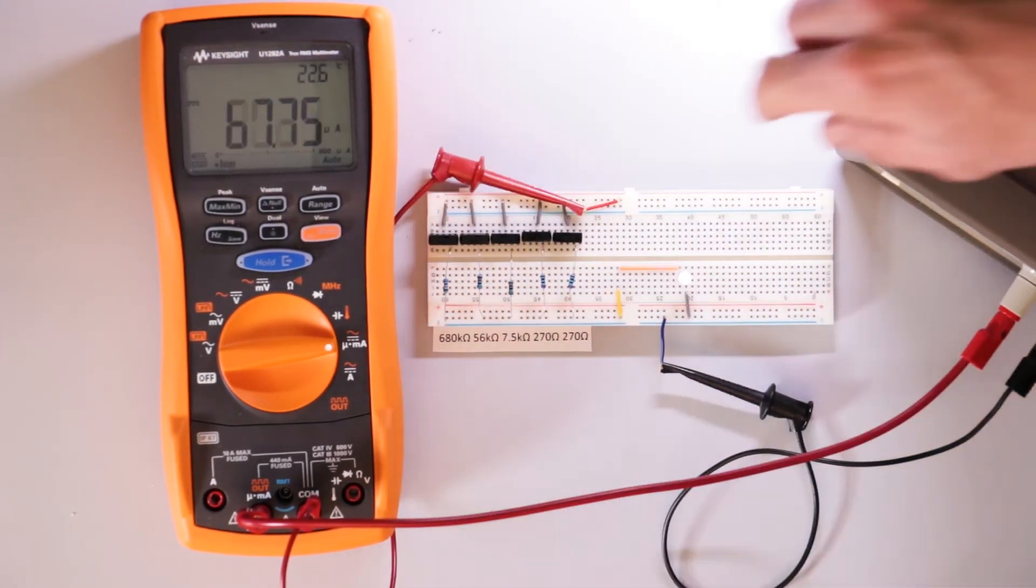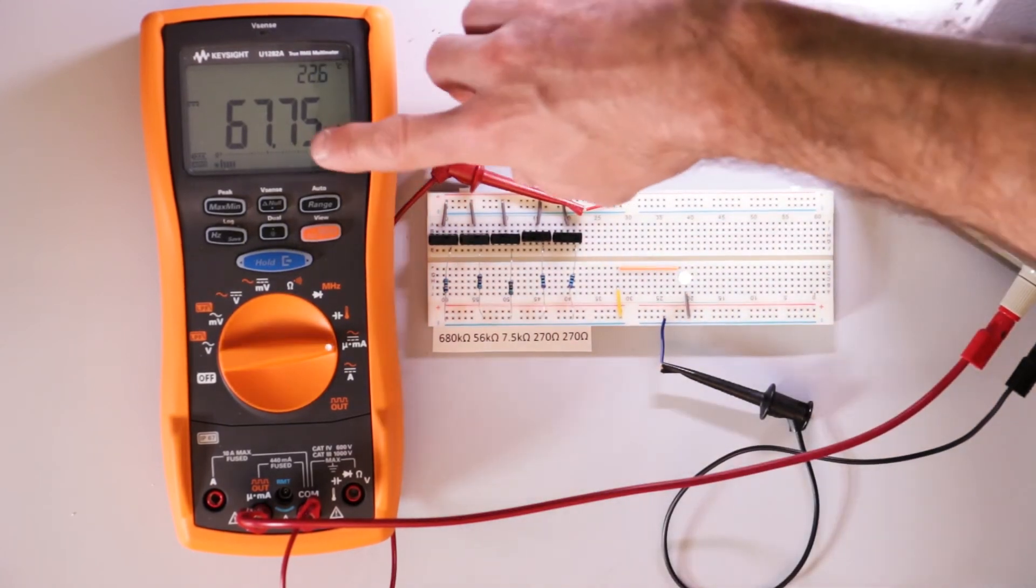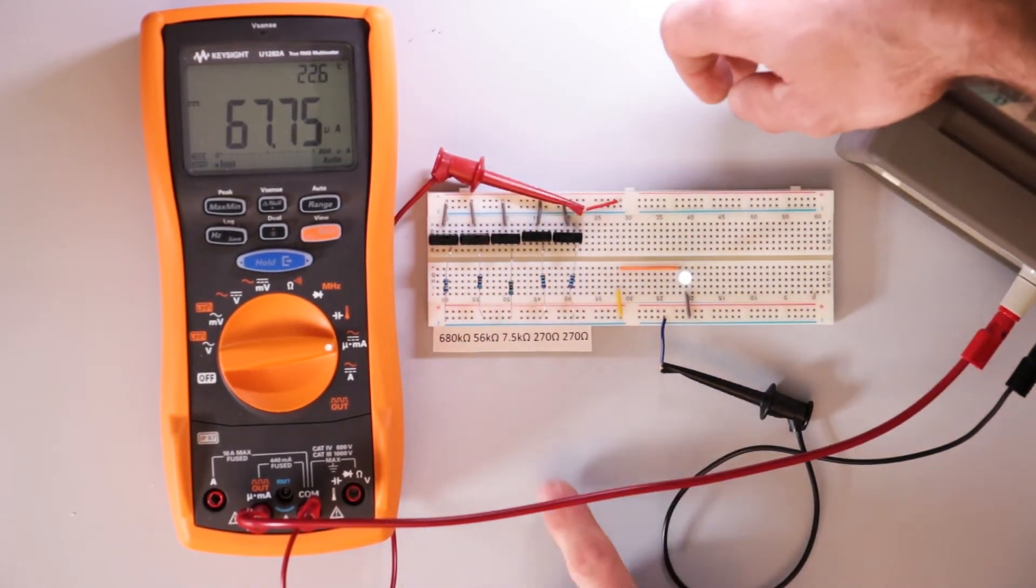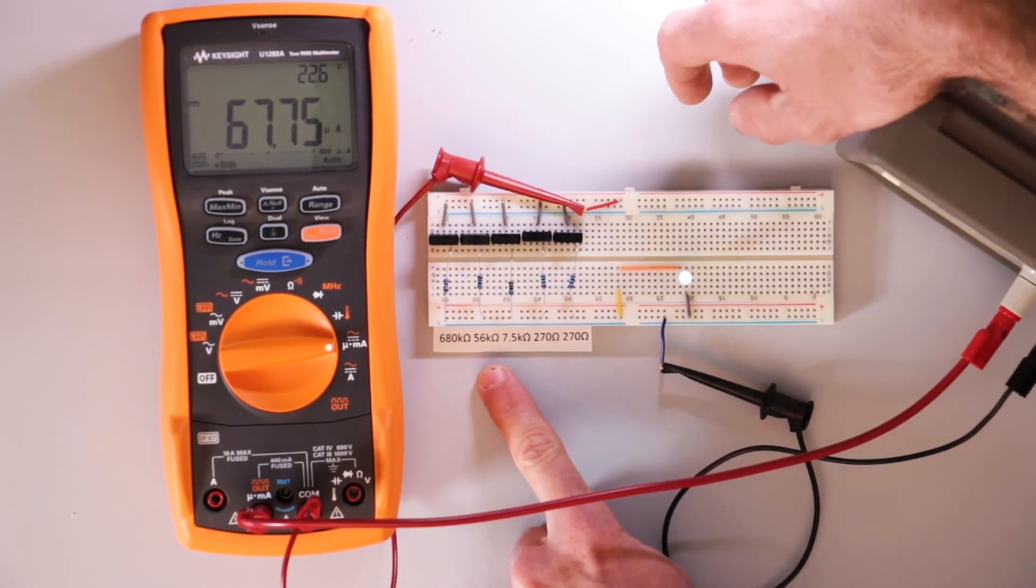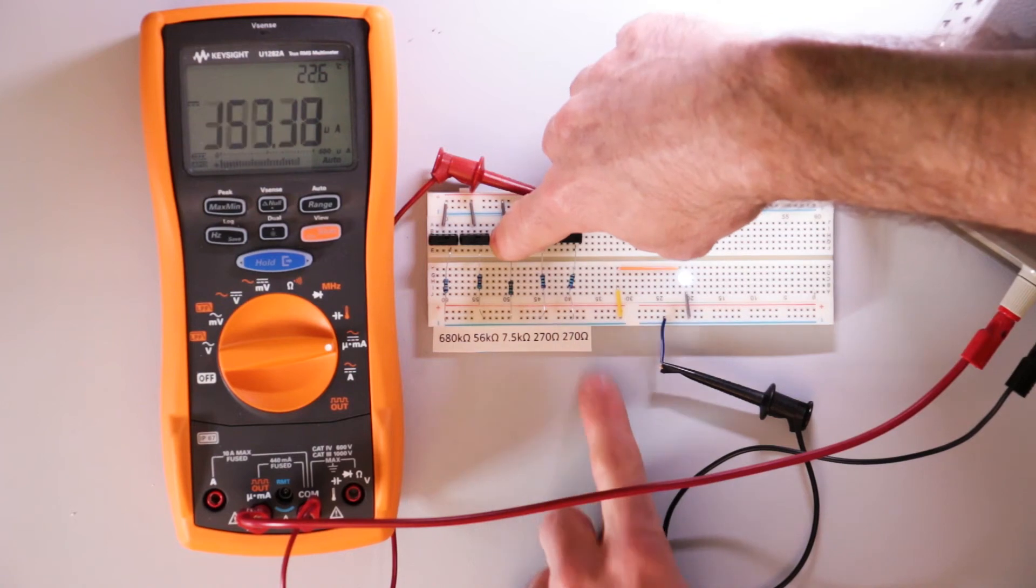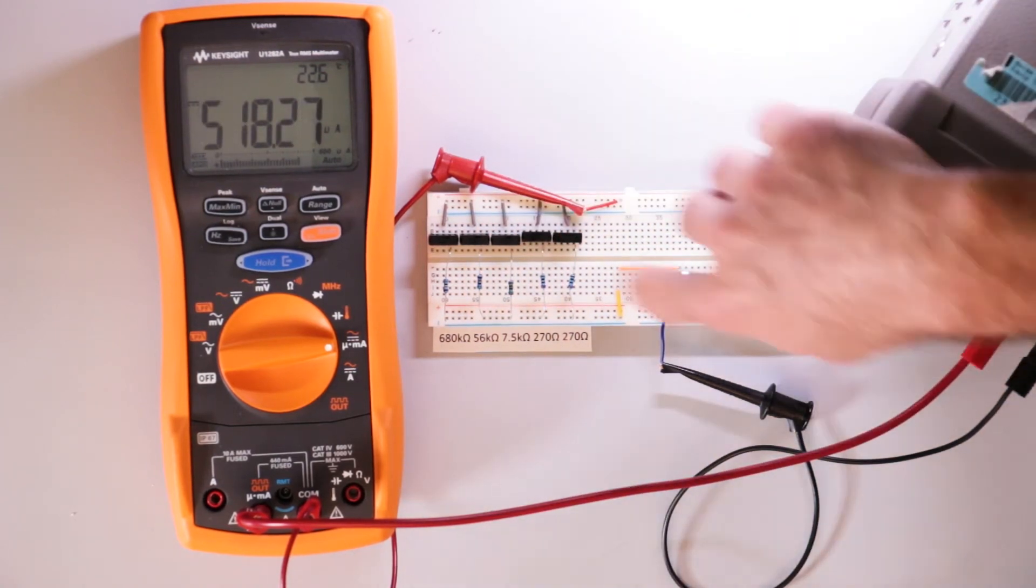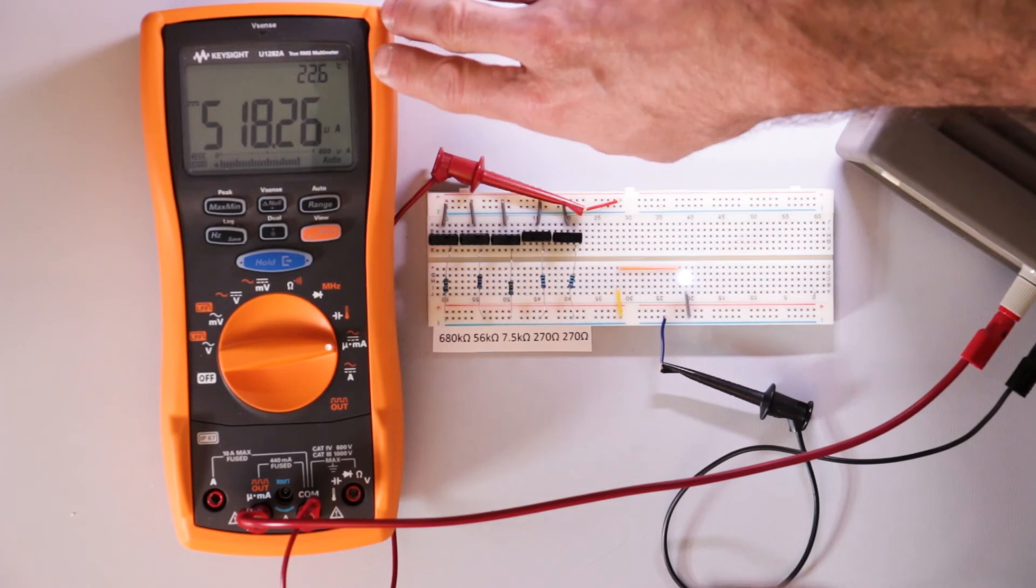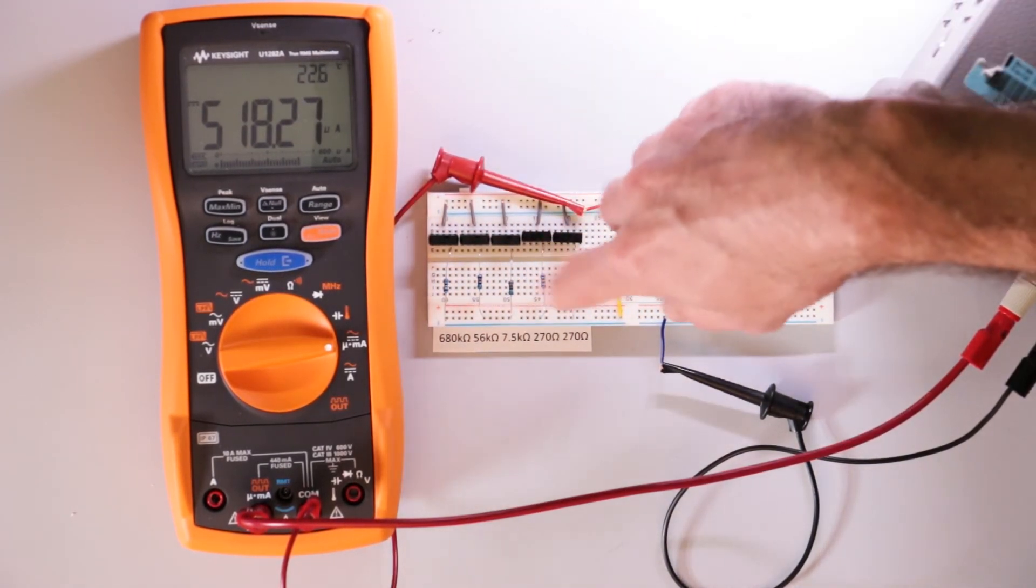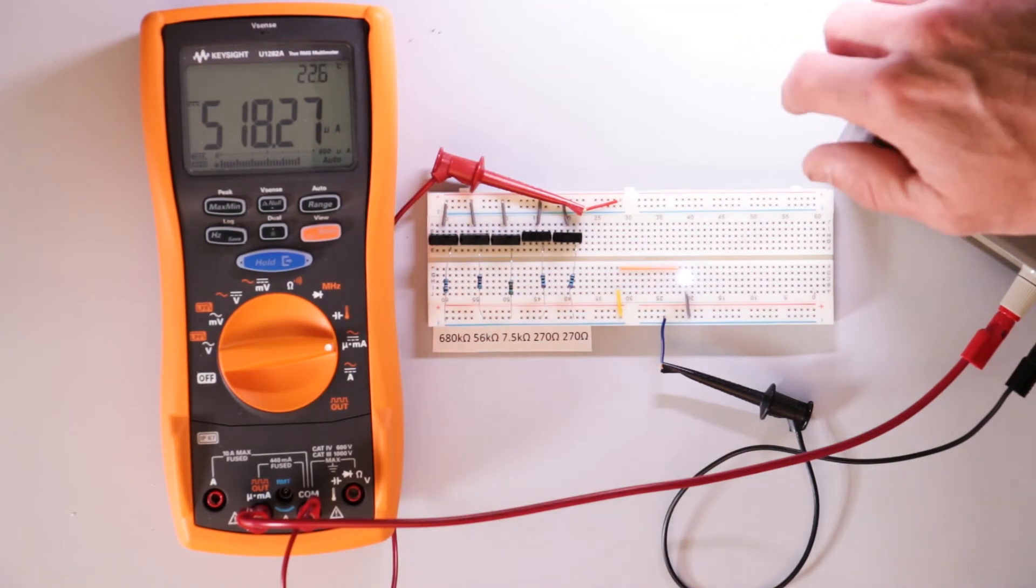We'll turn the next resistor on. So the LED is a little bit brighter and 67 microamps. That's the 680 kilohm in parallel with the 56 kilohm. Now I'll put the 7.5 kilohm in parallel. And now the LED is quite a bit brighter. The current going through the LED and the resistors in parallel is 518 microamps.